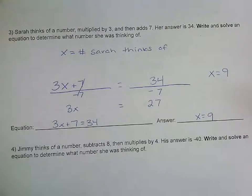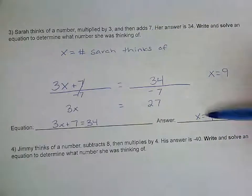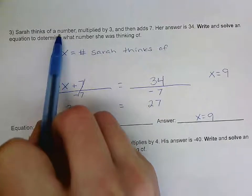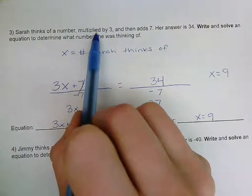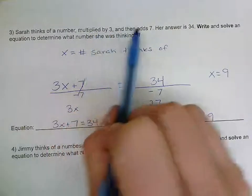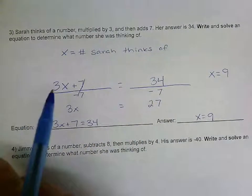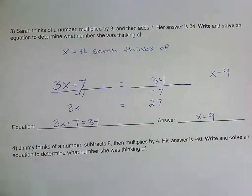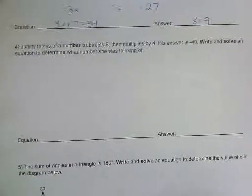We want to go back and check our answer. I can take 9 and follow the same steps Sarah did: if the number is 9, multiply by 3 to get 27, then add 7 — 27 plus 7 is 34. That matches, so I know I set up my equation correctly.